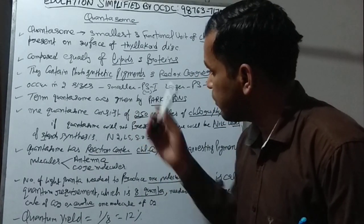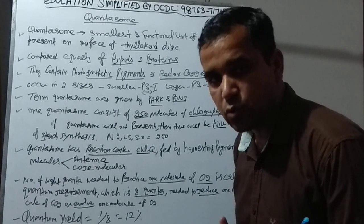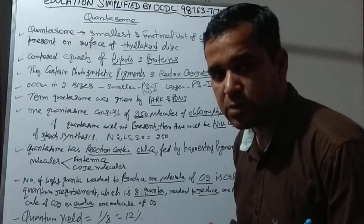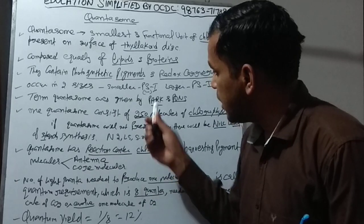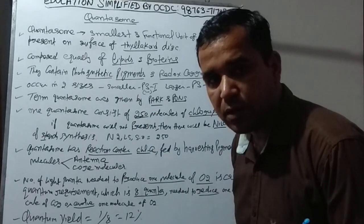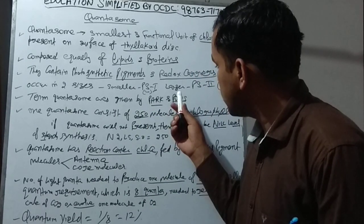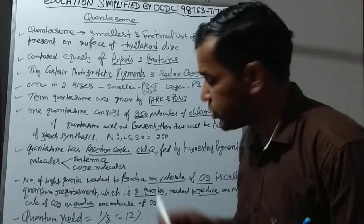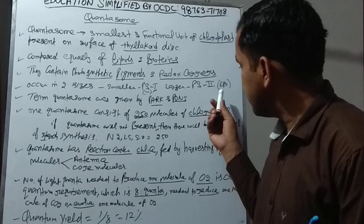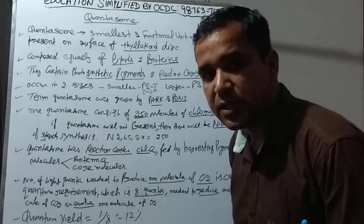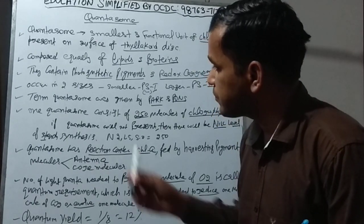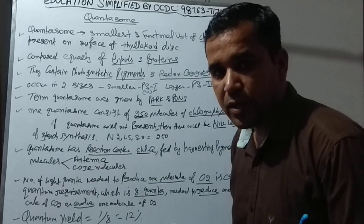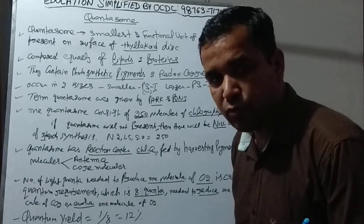The smaller form is called PS1, which stands for Photosystem 1, and it is efficient at a wavelength of 700 nanometers. The larger form is PS2, which is efficient at a wavelength of 680 nanometers. So quantasome comes in these two sizes corresponding to the two photosystems.